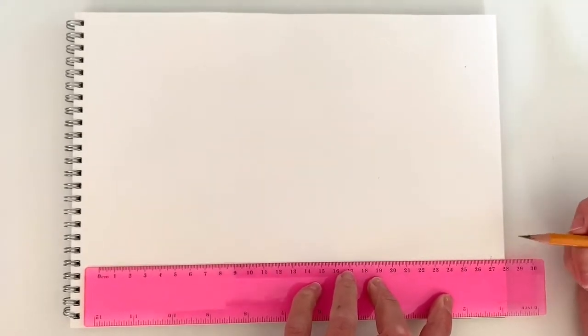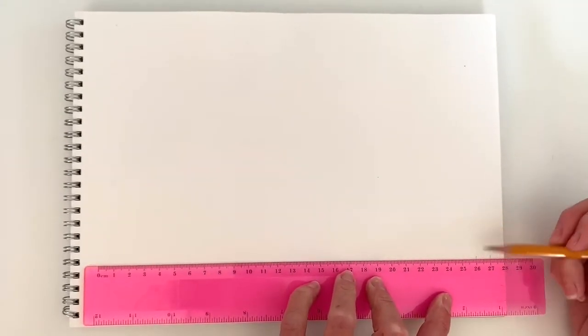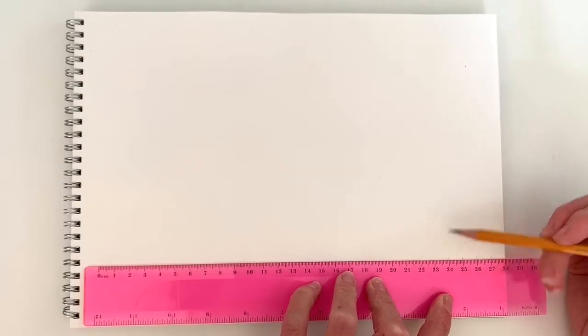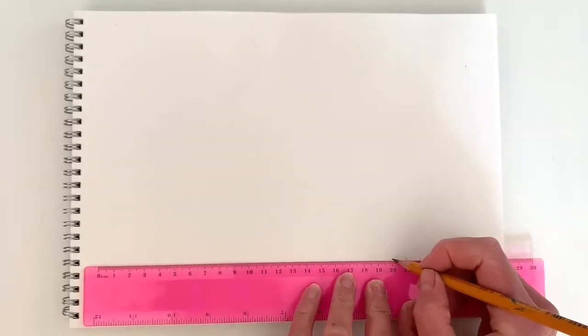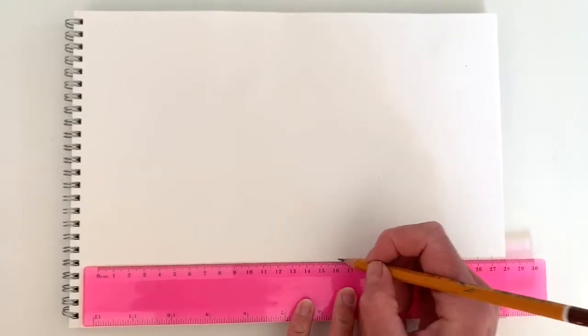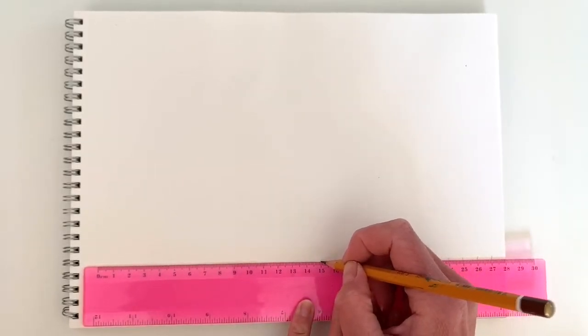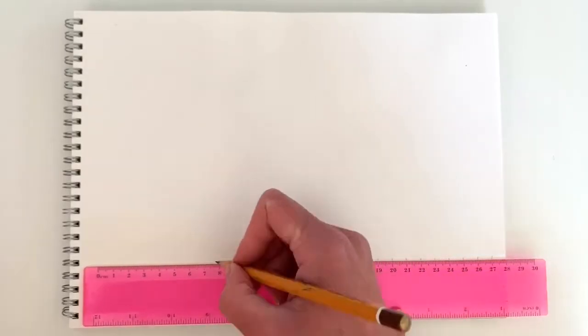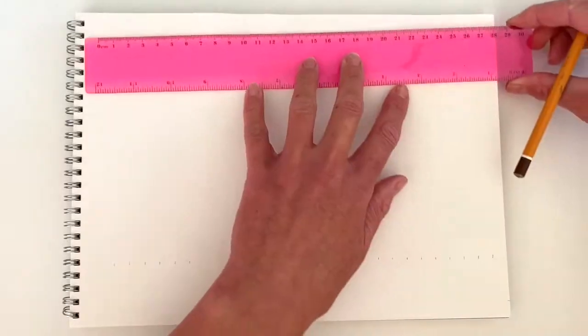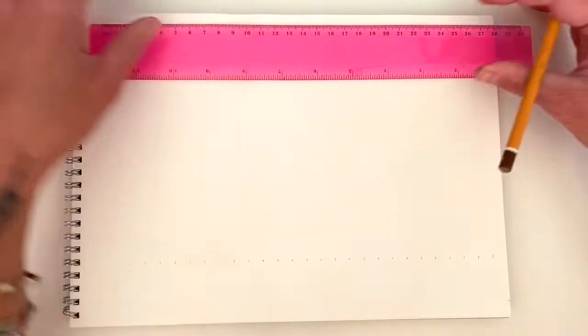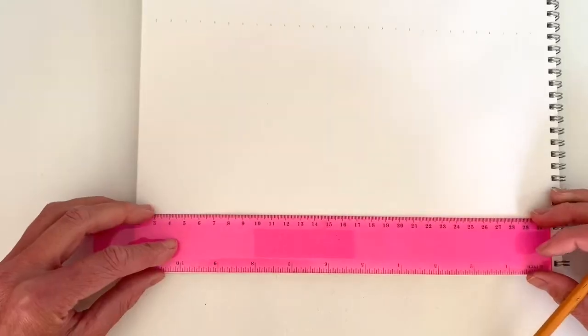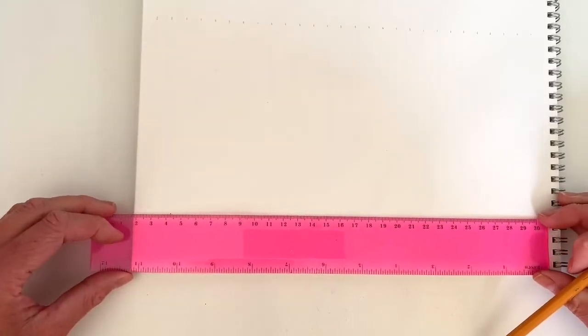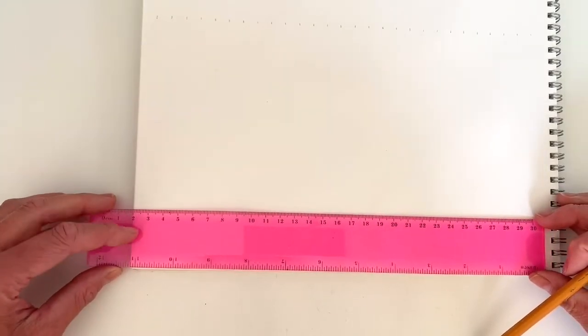Make sure your ruler is straight on the page. At every centimeter, add a pencil dash. You will also need one centimeter marks at the top of your page. To make it easier, turn your page over, lay your ruler on the page making sure it's straight, and then mark your one centimeter dots.